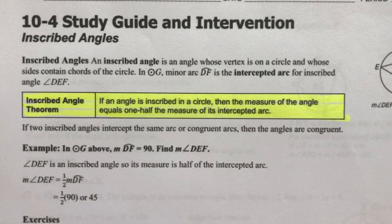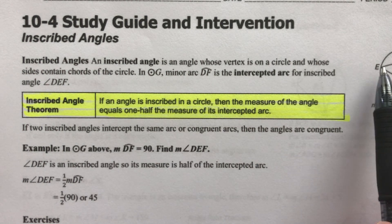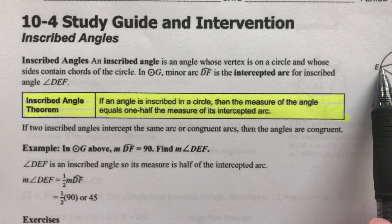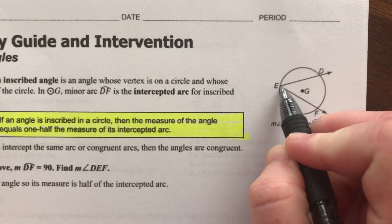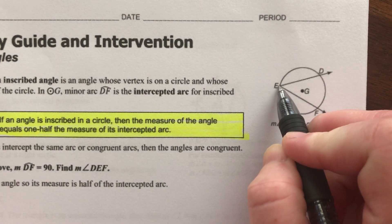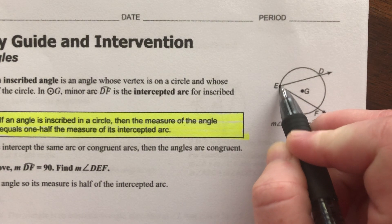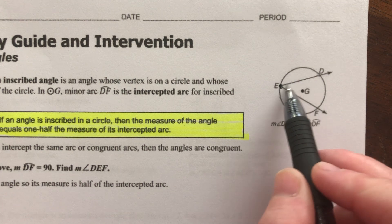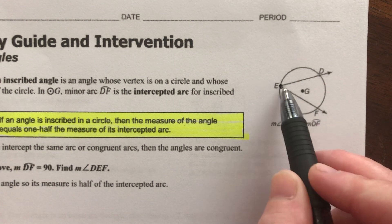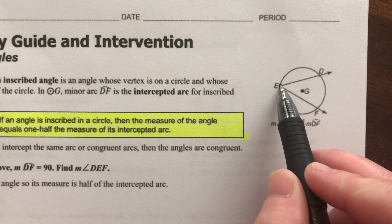Inscribed angles are angles where their vertex is on the circle. So here's a picture — this angle right here, its vertex is on our circle, so it's an inscribed angle. The vertex touches the circle.